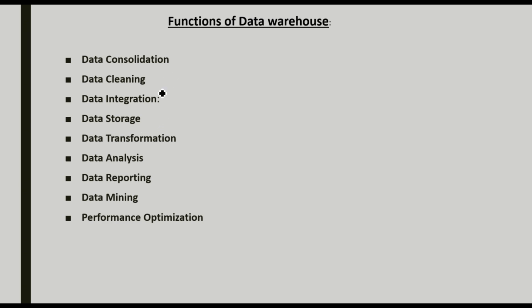The functions of a data warehouse are: data consolidation, data cleaning, data integration, data storage, data transformation, data analysis, data reporting, data mining, and performance optimization. Data warehouse and data mining are closely related — our data mining subject is all about data warehouse. Let's go into detail on each function.